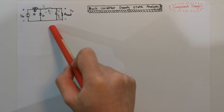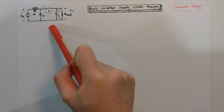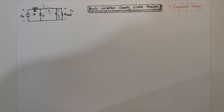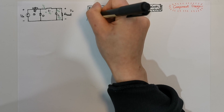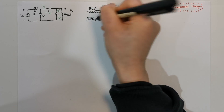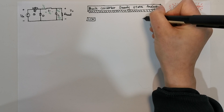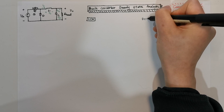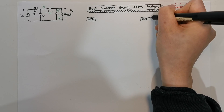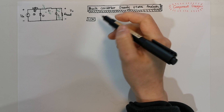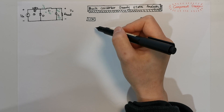This is the topology of the buck converter. There are two operation modes in a buck converter: continuous conduction mode and discontinuous conduction mode. Let's start with the easier one — continuous conduction mode, also called CCM mode.